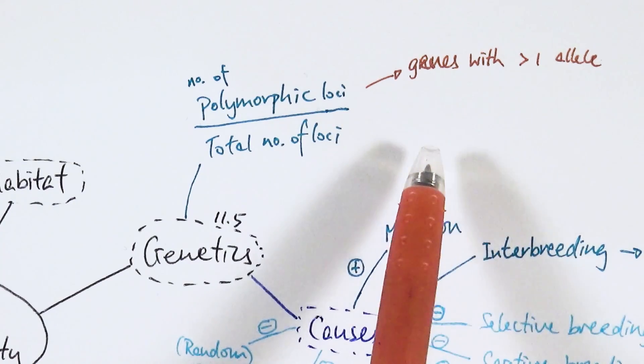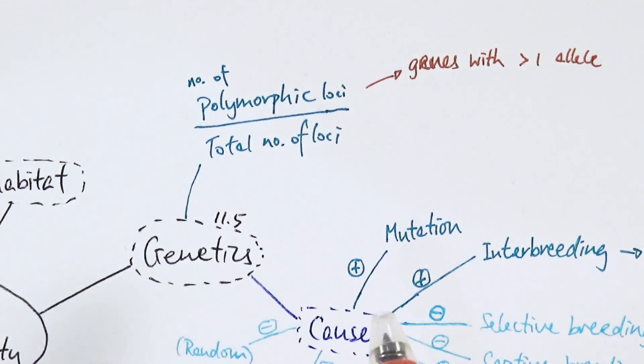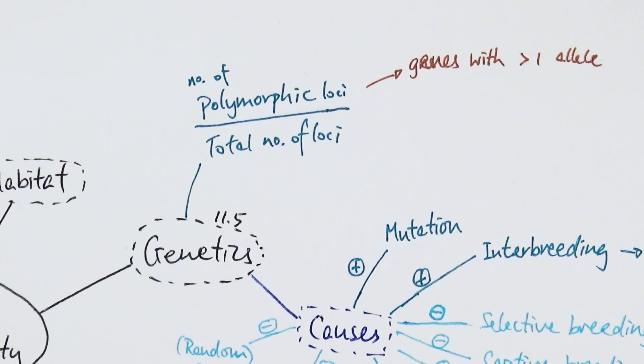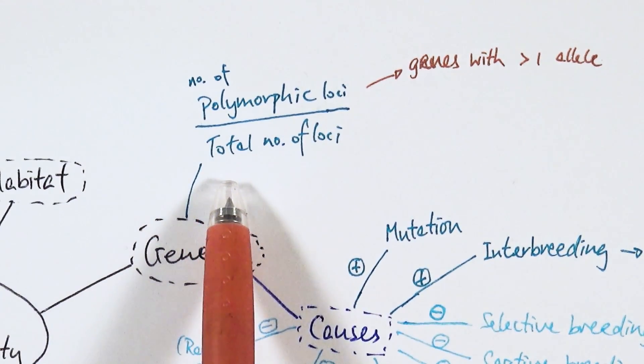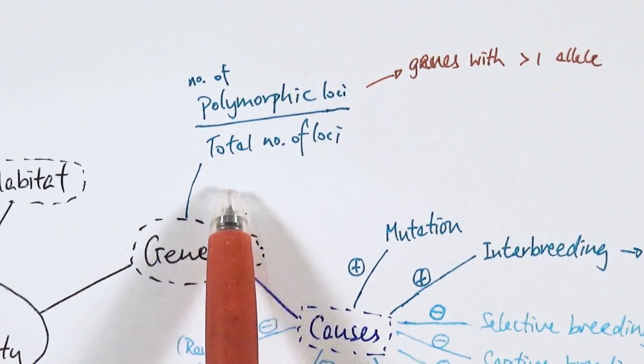Polymorphic loci refers to genes with more than one allele, like dominant and recessive. Monomorphic loci means genes with just one version. Obviously, the more polymorphic genes you have, the higher the genetic biodiversity. To calculate it: number of polymorphic loci divided by total number of loci on a chromosome. It's literally calculating percentages.